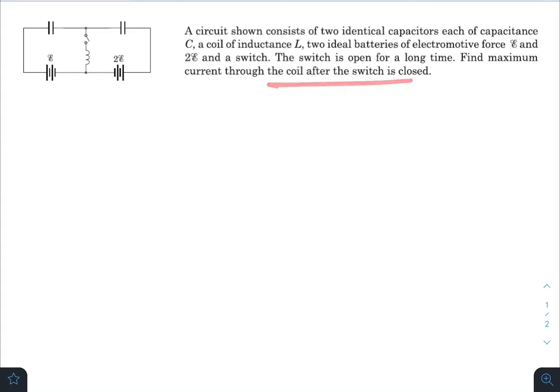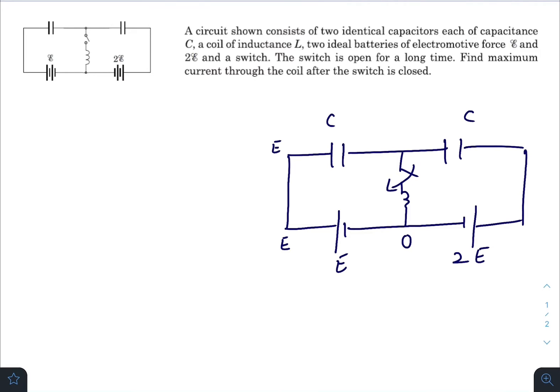Okay, so let us draw the circuit once again. We have a switch, inductor, another battery. This one is 2ε, and capacitors C and C. Let at t equals zero the switch is closed. Let us consider the reference voltage zero at this point. This one will be ε, and this one will be 2ε.